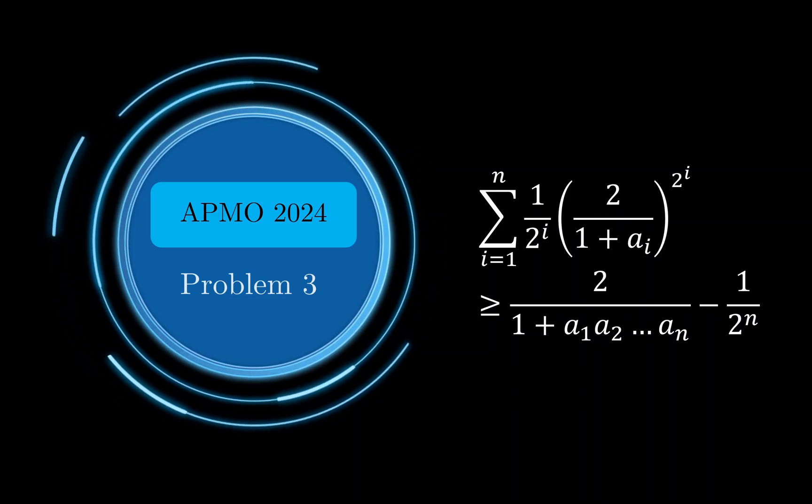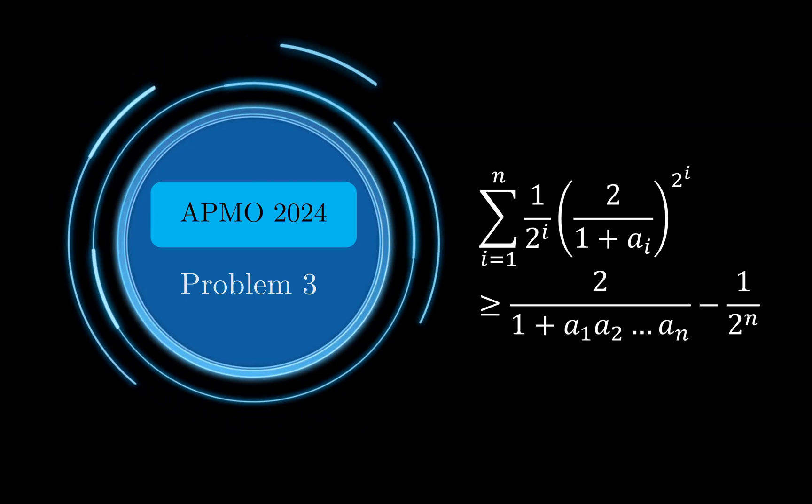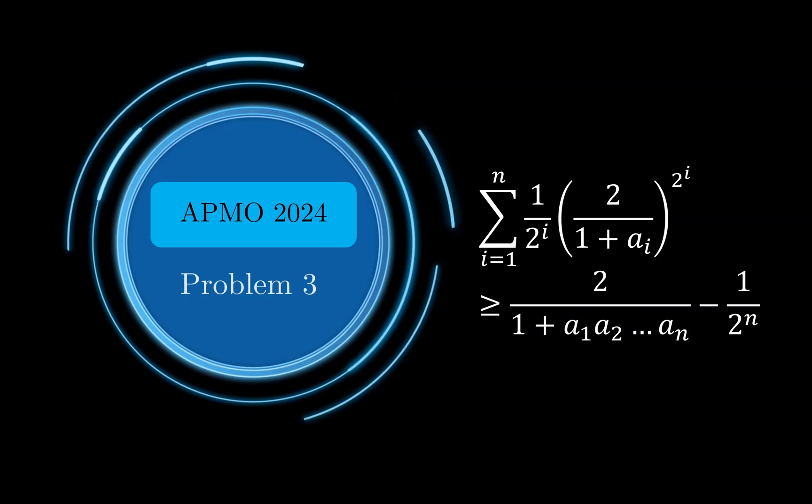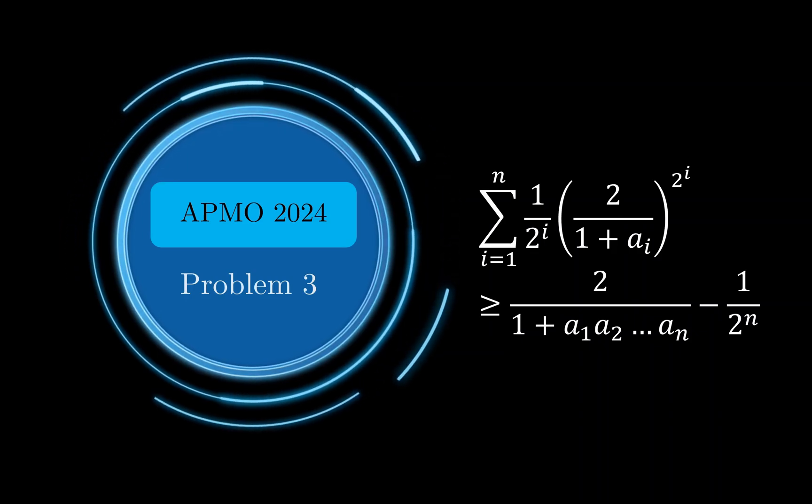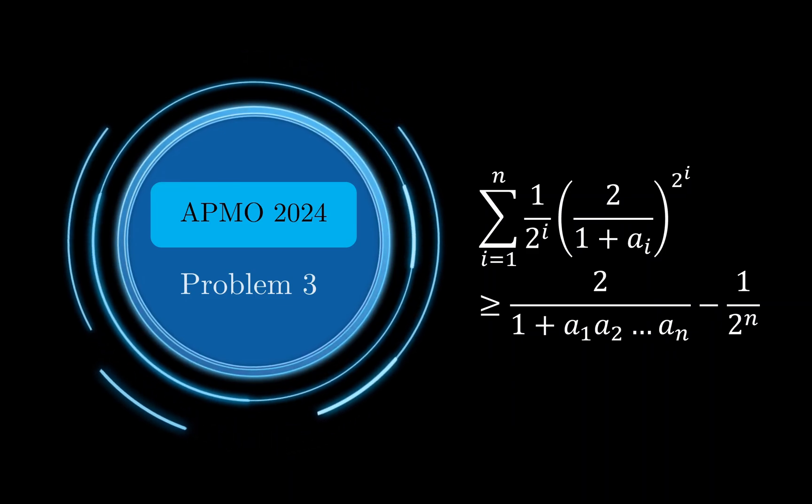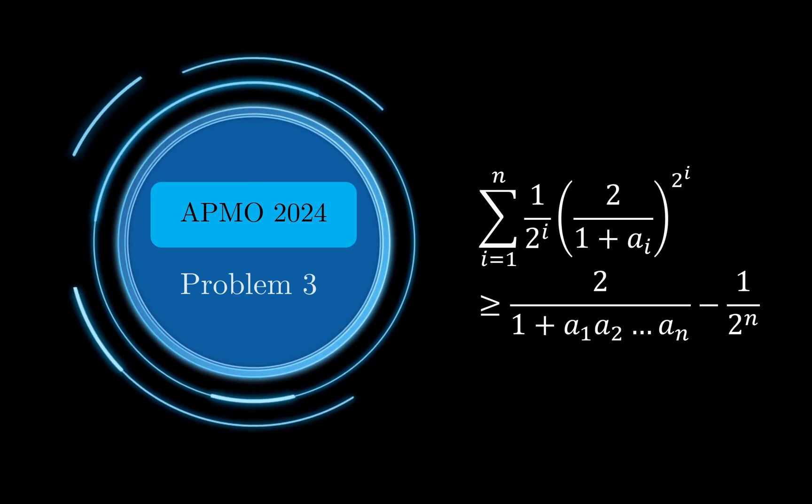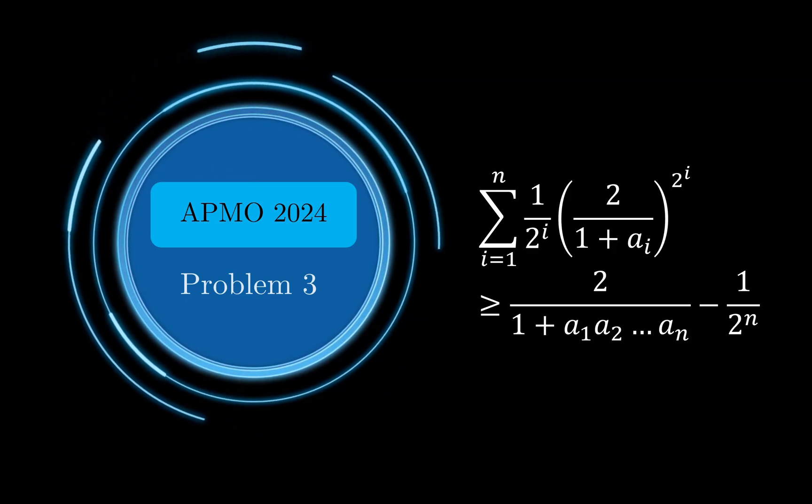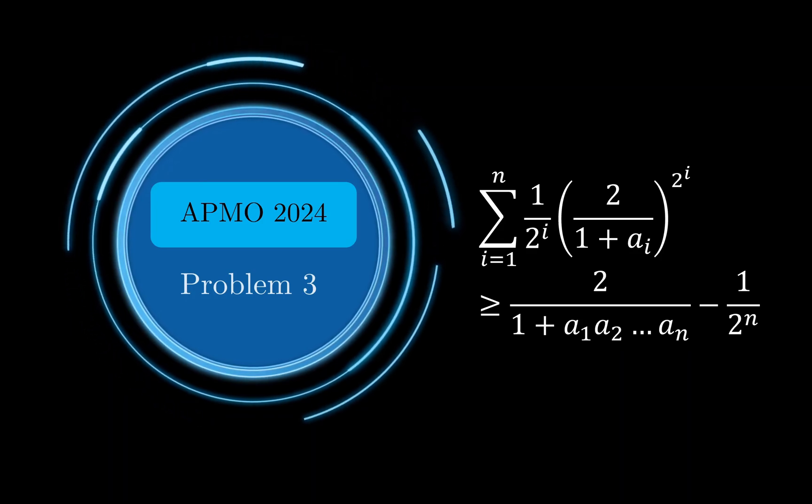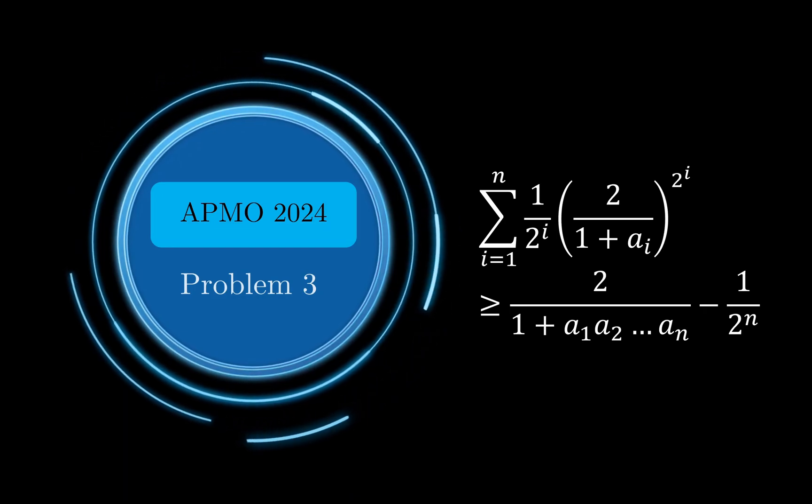Hello everyone, welcome back to Deakin Cuts. The Asian Pacific Math Olympiad has finally released its 2024 problems, and today we will be taking a look at problem number 3, which is an inequality problem. In recent years, inequality problems have shifted away from being just simple applications of standard results to requiring a lot more ingenuity. So without further ado, let us see what this problem has in store for us today.